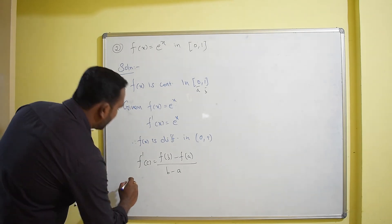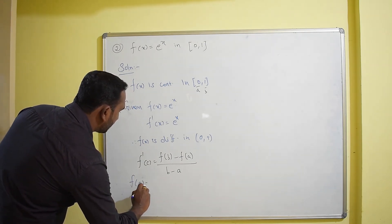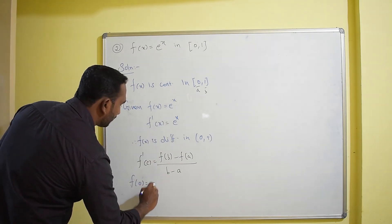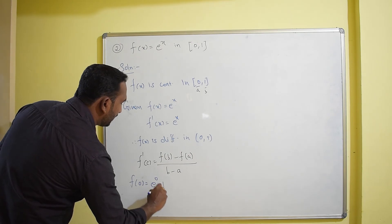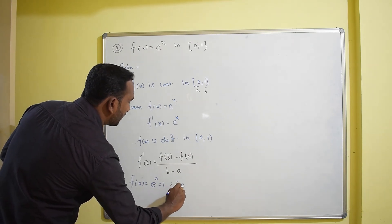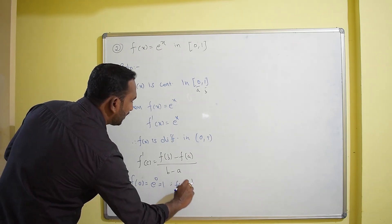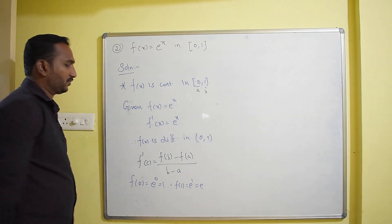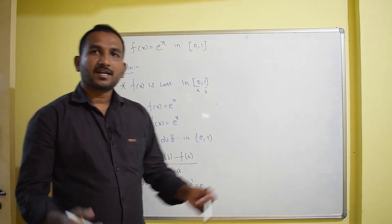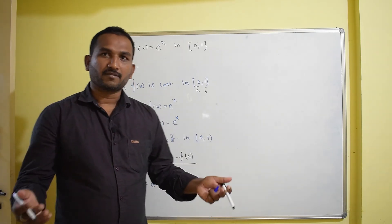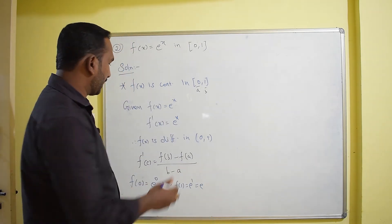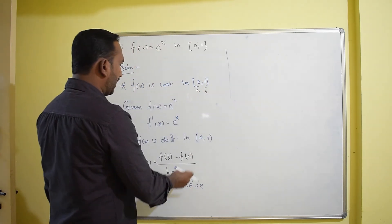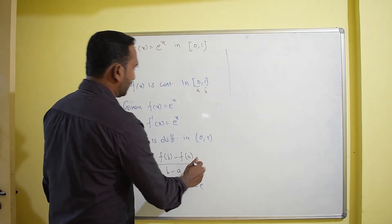We compute the endpoint values: f(0) = e⁰ = 1, and f(1) = e¹ = e, which is approximately 2.7. We now substitute these values into the LMVT formula.